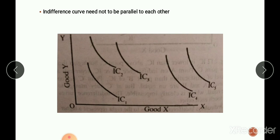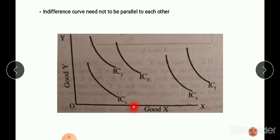An indifference curve need not be parallel to each other. Indifference curves need not be parallel because they are based on ordinal measurement of utility, and the rate of substitution need not be the same across all indifference curves. There is no definite proportion between the range of different levels of satisfaction represented by different indifference curves. Indifference curves can be drawn in any manner, but they must slope downward from left to right, be convex to the origin, and never intersect each other.